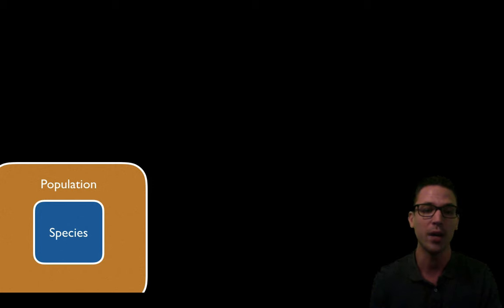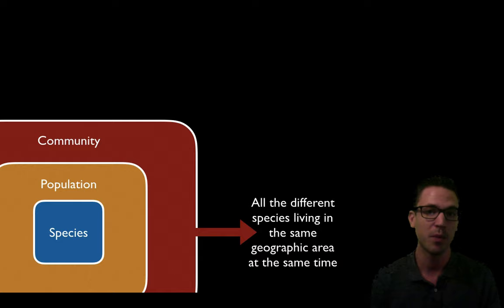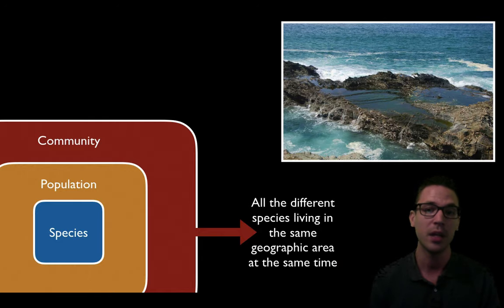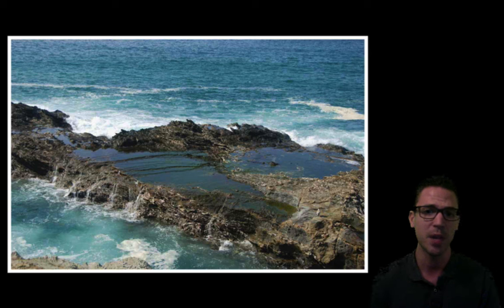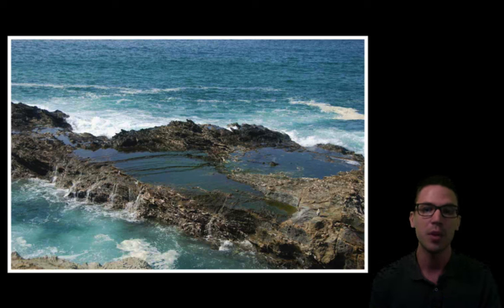Going even wider, if we get tons of different species living together in the same habitat, like that hydrothermal vent community, we get a community. A community is all the different species living in the same geographic area at the same time. For example, at the rocky shore this habitat is made up of a community of organisms adapted to that particular environment, such as the mollusk community — clams, oysters, and sea snails — all sharing characteristics like shells and all adapted to live together there.